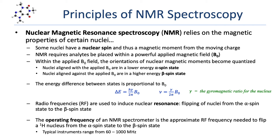As you can see from this first equation, the energy difference between those spin states is proportional to the applied magnetic field. And because the energy and the frequency of electromagnetic radiation are linearly proportional, that means that the frequency of energy required to flip a nucleus from the alpha state to the beta state is also proportional to the applied magnetic field. Radio frequencies are used to induce nuclear resonance, the flipping of nuclei from the alpha spin state to the beta spin state.